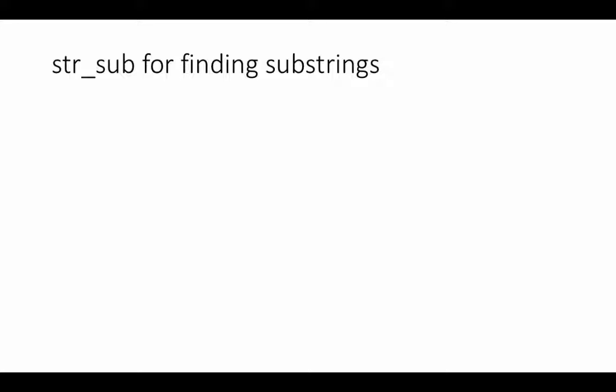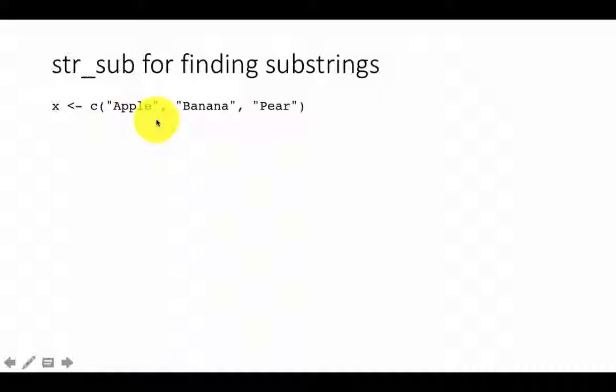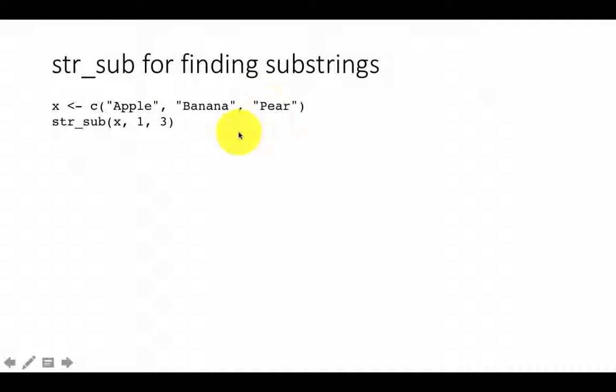We can use the function STRSUB for finding substrings, which are portions of strings. So for example, suppose you want only the first five characters, or the 6th to 10th characters. Those are called substrings. Suppose we have a vector of strings — apple, banana, pear — and we want to find the first three characters of each.